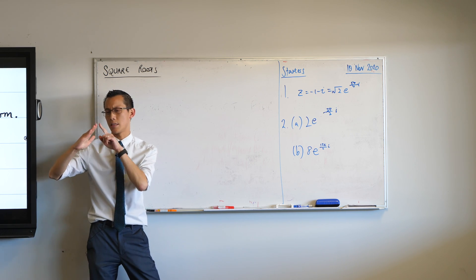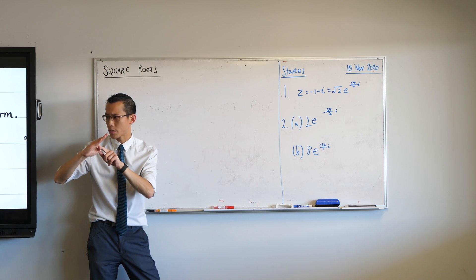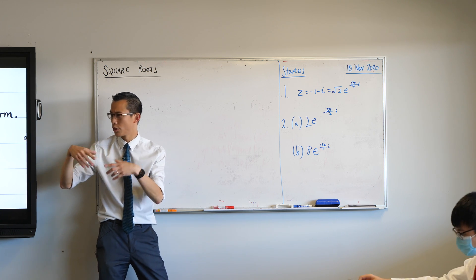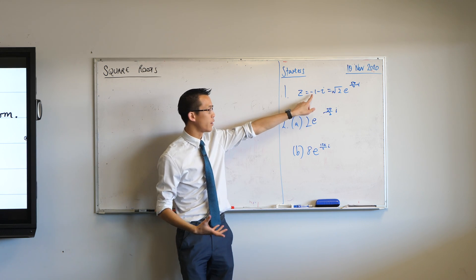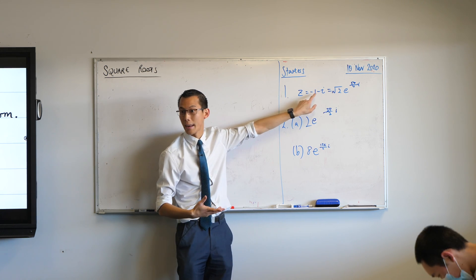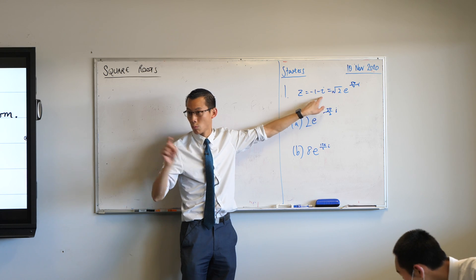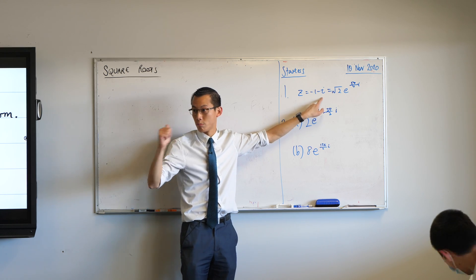The modulus is the hypotenuse of a right-angled triangle. In this case, it's a right-angled triangle with shorter sides 1 and 1. So 1, 1, root 2. Thumbs up.